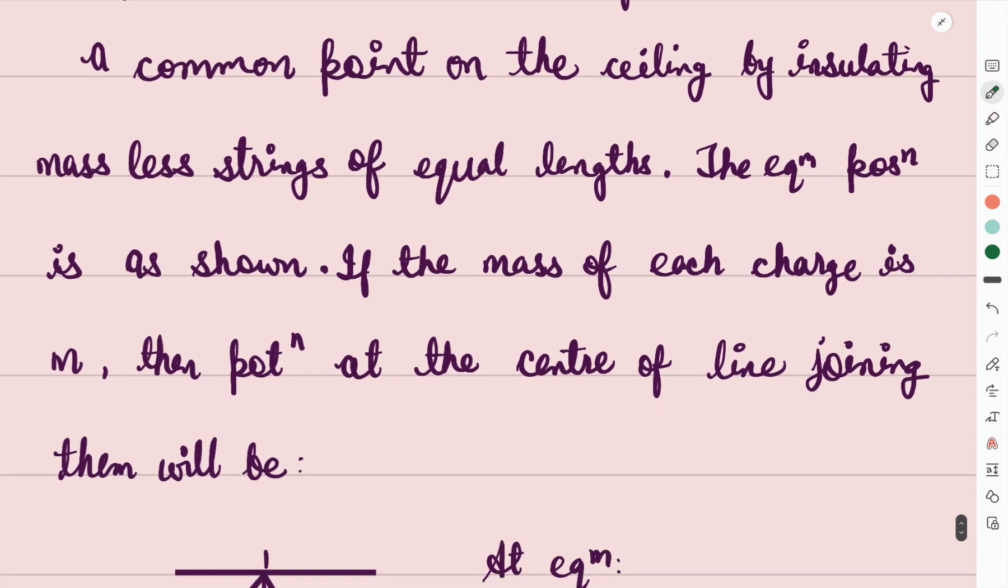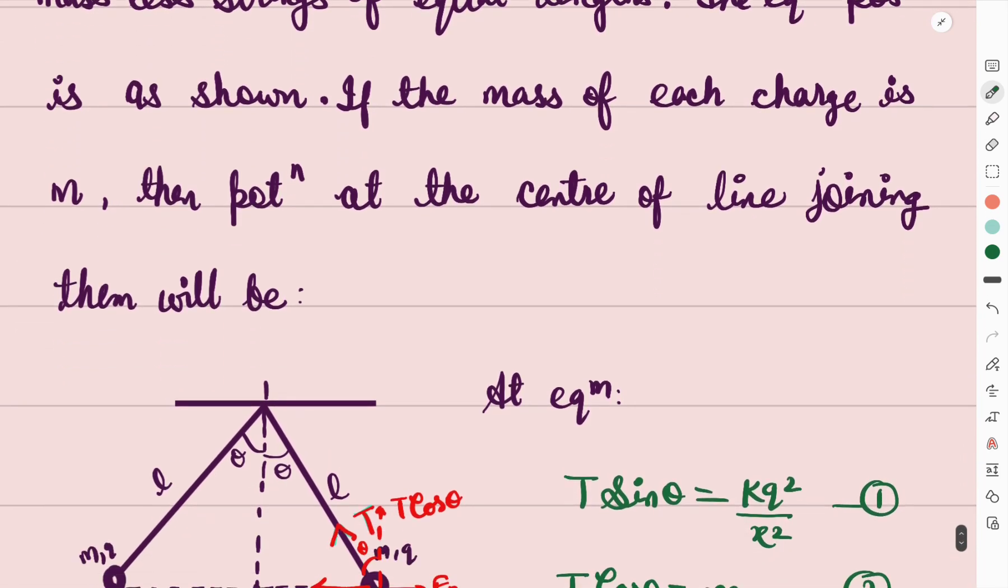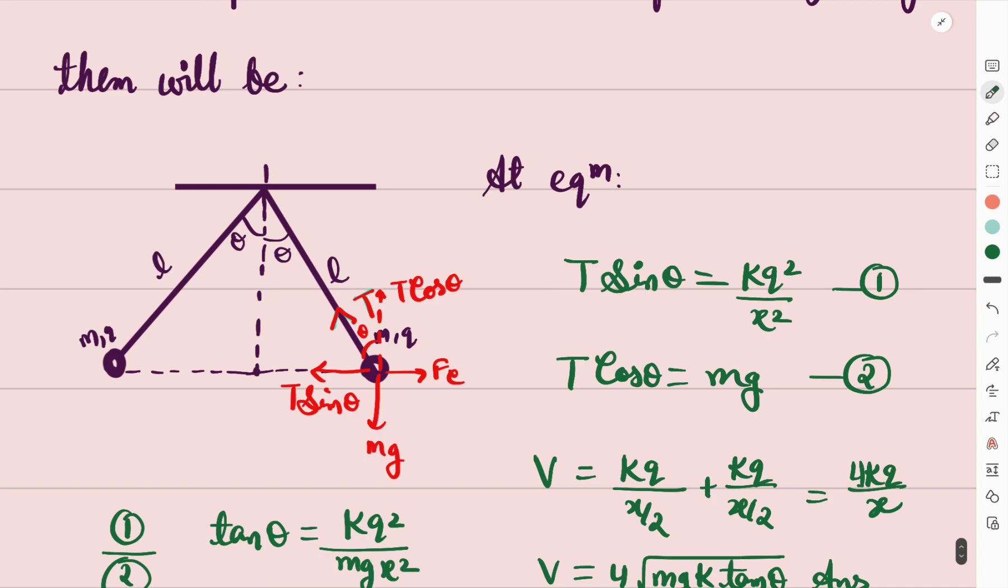The equilibrium position is as shown in the figure. If the mass of each charge is m, then the potential at the center of the line joining them will be... To the upper equilibrium position mein aamal lete hain ki...